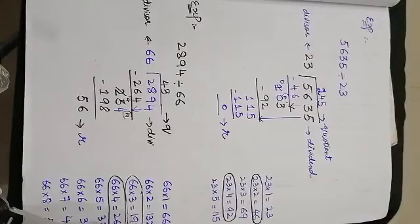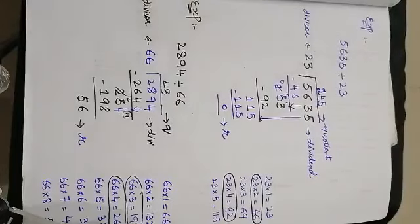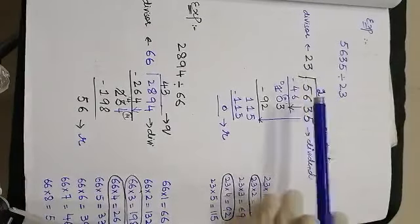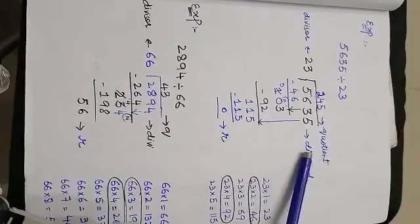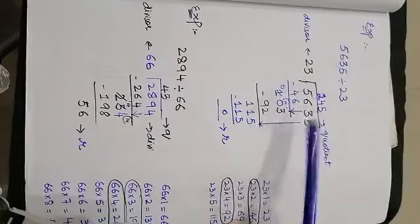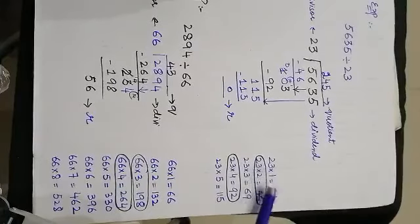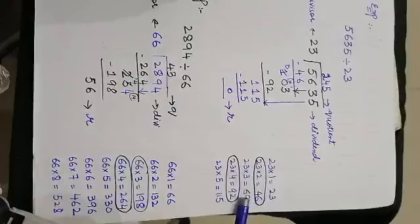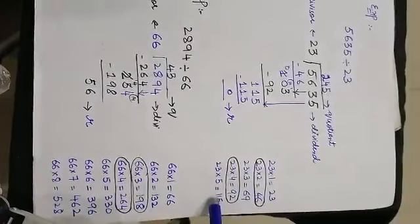Moving to the next example — a four-digit number divided by a two-digit number: 5635 divided by 23. So 5635 is the dividend and 23 is the divisor. First, write the table of 23: 23 ones are 23, 23 twos are 46, 23 threes are 69, 23 fours are 92, and 23 fives are 115.